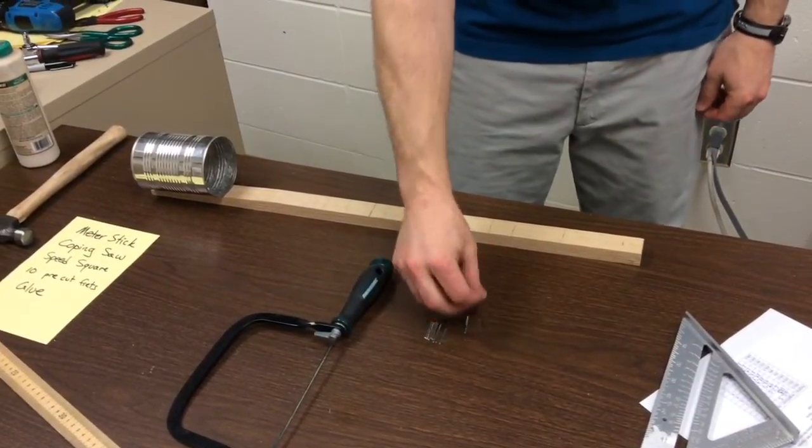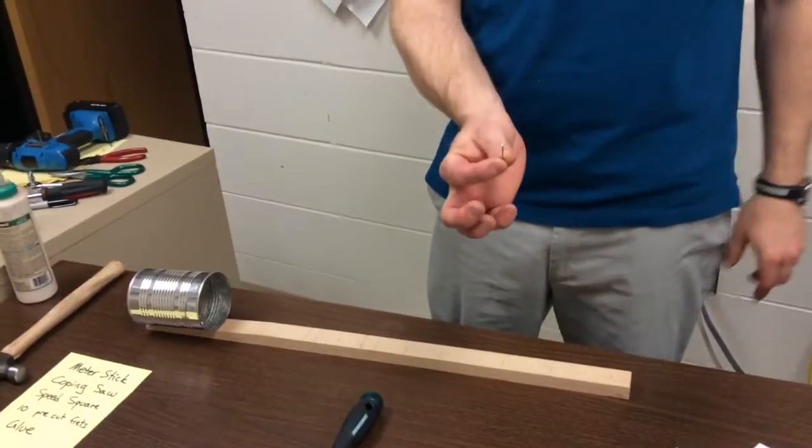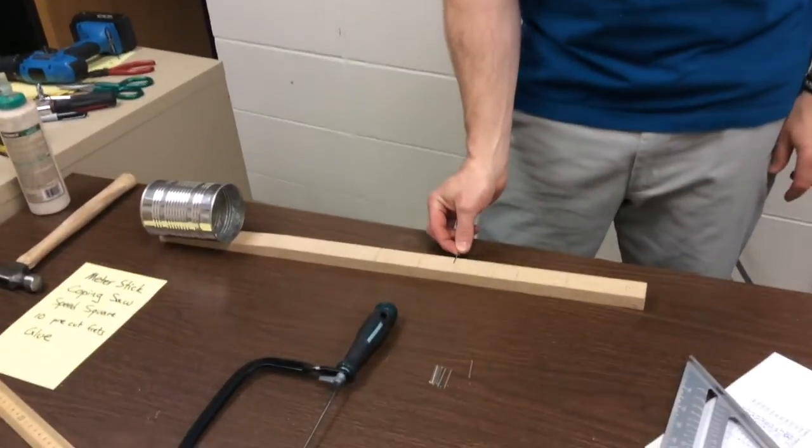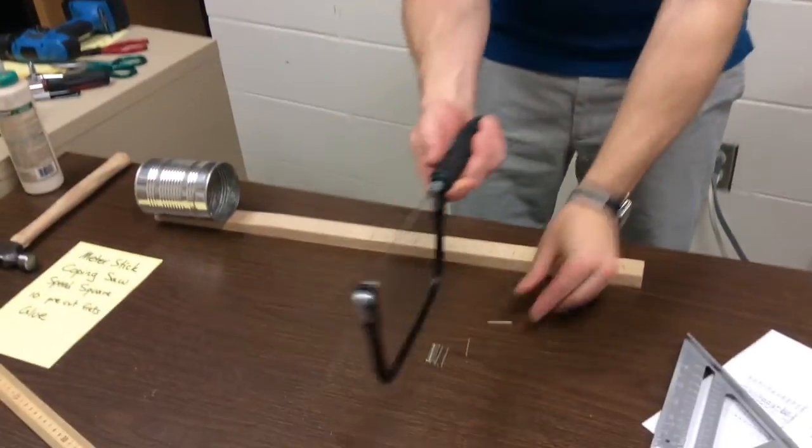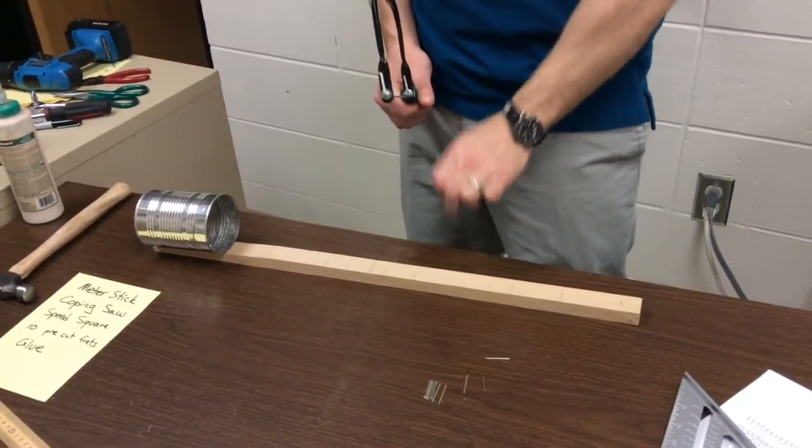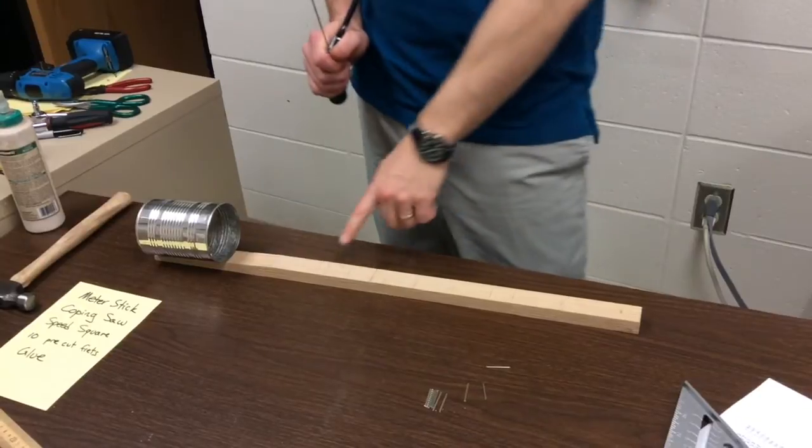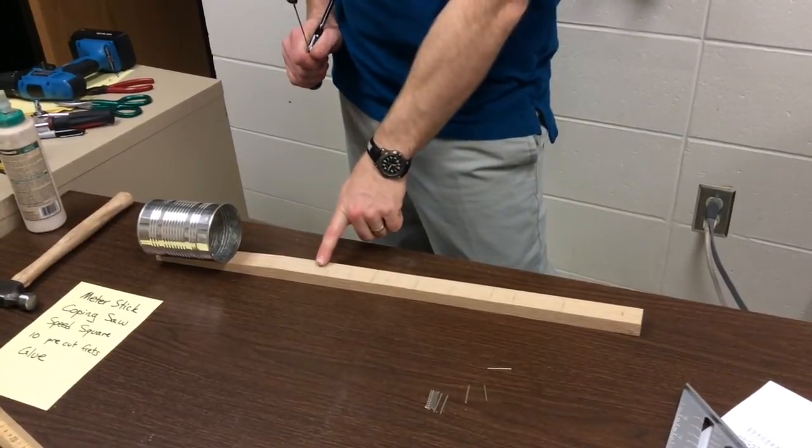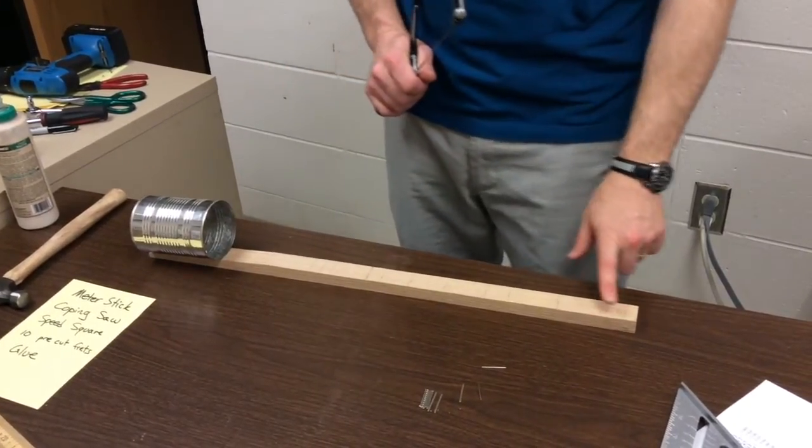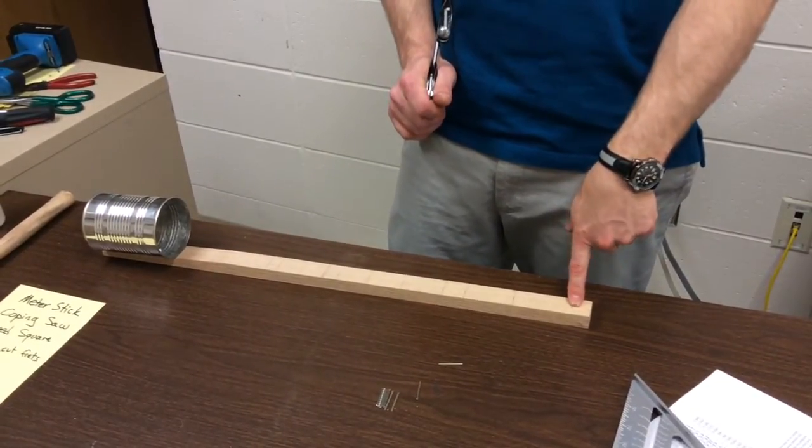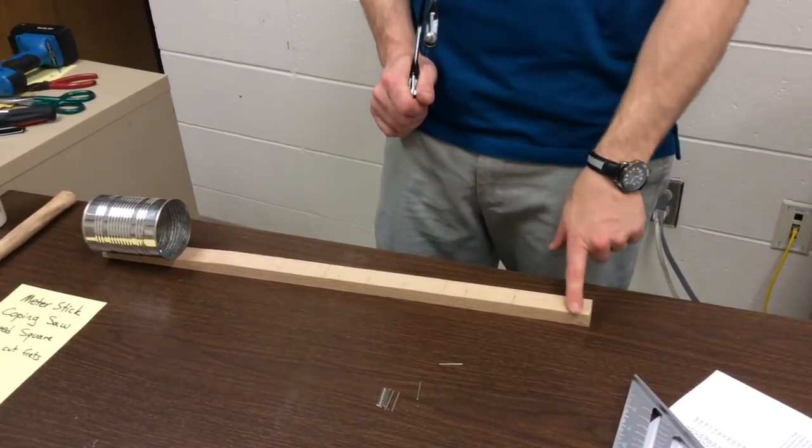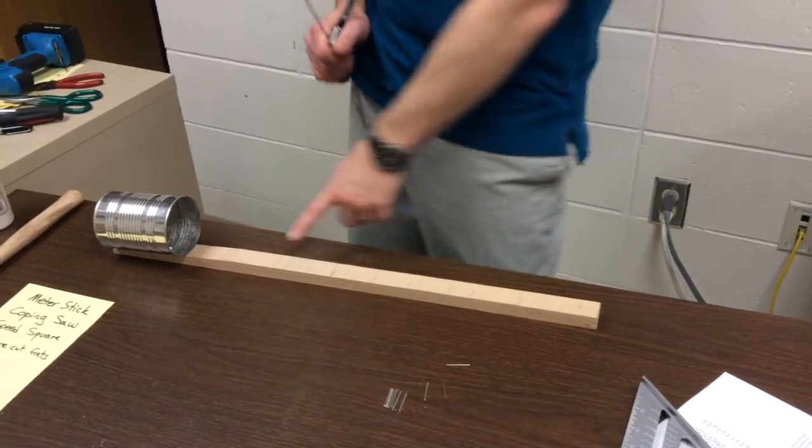Next, we need to insert the frets into the wood. First, pre-saw the lines drawn on the Kanjo stick. You'll have ten lines and an eleventh one at the top. The eleventh line is where the tuner will go, so don't cut that one—just the bottom ten.